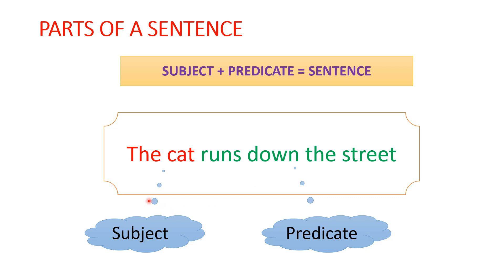Here, who or what the sentence is about is the cat. So, cat is the subject. The rest of the sentence here is the predicate — runs down the street is the predicate. The predicate tells us what the subject is doing.